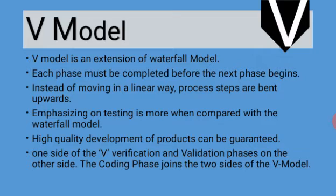The V model is an extension of the waterfall model with some extra efficiency and qualities. Like the waterfall model, each phase must be completed before the next phase begins. However, instead of moving in a linear way, the process steps are bent upward. When you see the diagram of it, you will easily understand what we are saying.